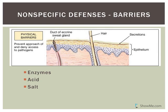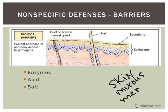The first thing we have is mechanical barriers — physical barriers. They are part of our first line of defense. They include your skin, which you see a picture here, and mucous membranes. As long as the skin is intact, it's actually a barrier to keep pathogens from coming in. But if you cut it, pathogens can actually infiltrate into the skin — they prevent approach and deny access to pathogens.